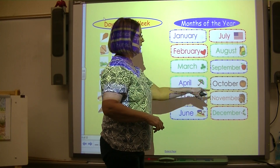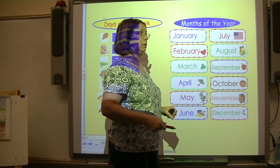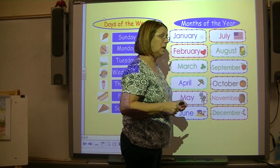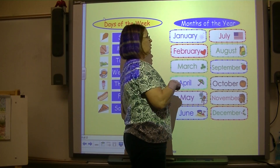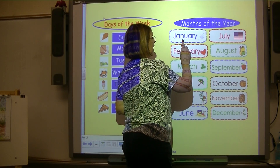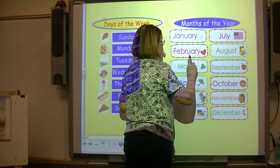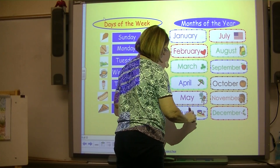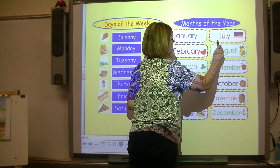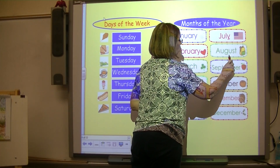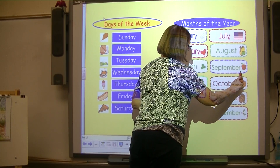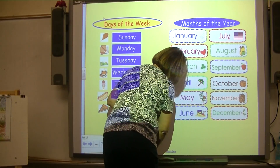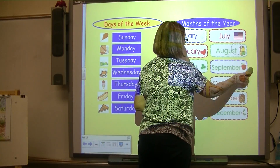Months of the year — same thing, they all begin with a capital letter. How many months of the year are there? Yes, 12. Read them with me: January, February, March, April, May, June, July, August, September, October, November, December. So there are 12 months in a year.